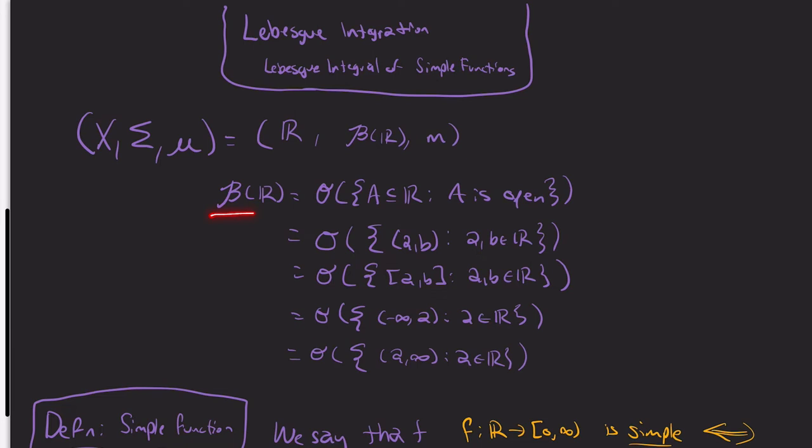Just as a review, the Borel sigma algebra is the sigma algebra generated by the open subsets of the real line. If you remember the Baire category theorem, if A is open, then it can be written as a countable union of open intervals. So it's also the sigma algebra generated by the set of open intervals. Because you can write a closed interval as an intersection of open intervals, it's the same as taking closed intervals or half open intervals from negative infinity to A and A to infinity.